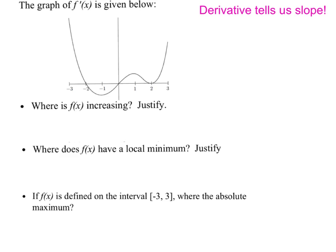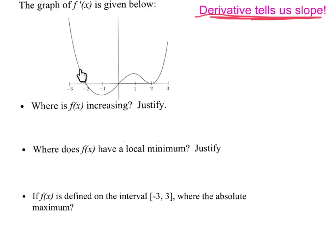We're going to do some review on using a derivative and second derivative to analyze a function. The first thing we need to remember is that a derivative tells us the slope. So, I have a graph of f prime right here. When f prime is positive, that means f has a positive slope, which means f is increasing.